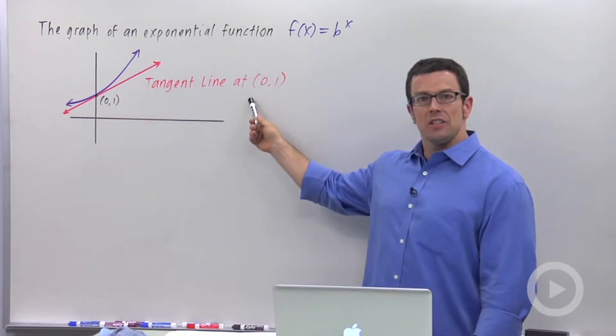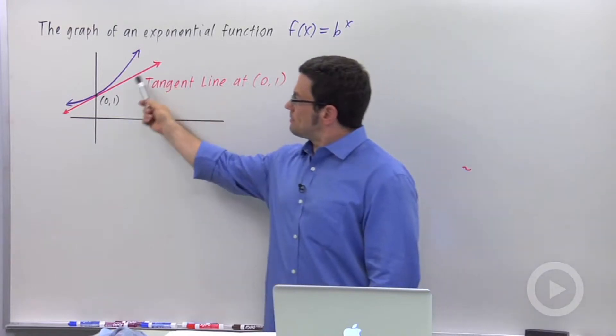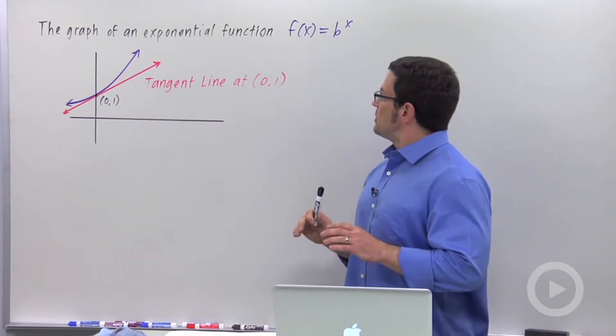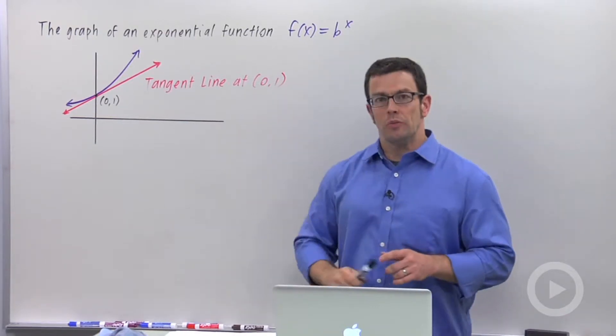And I've also drawn its tangent line at the point (0,1). Now, what I'd like to do is I'd like to explore the relationship between the base b and the slope of the tangent line.